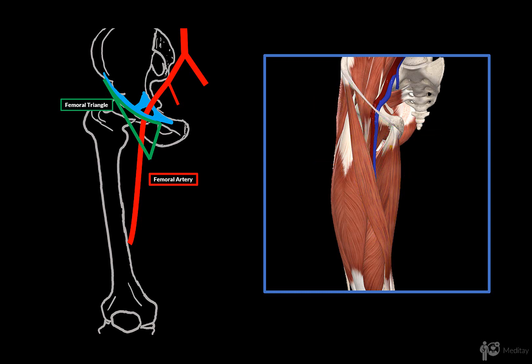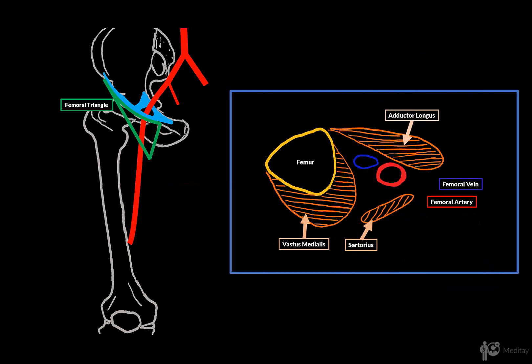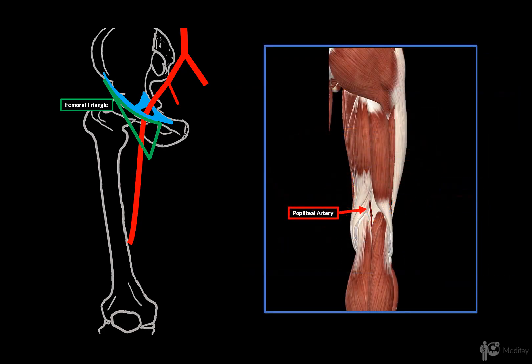As the artery passes the femoral triangle, it descends and goes through the adductor canal. If we make a cross section, you'll find the artery going between the adductor longus, sartorius and vastus medialis, to then leave the canal at the lower orifice and continue as the popliteal artery behind the knee.